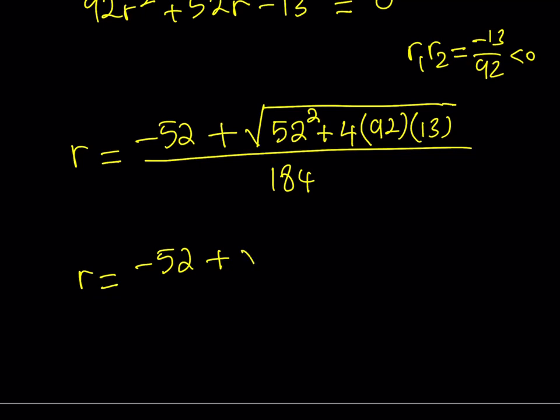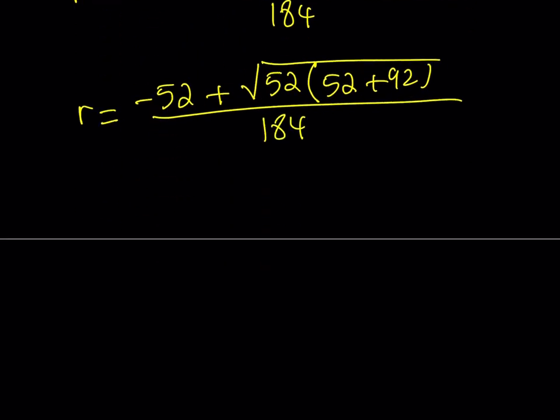So what I can do here is I can just go ahead and factor out a 52. And that should give me 52 times the quantity, 52 plus 92, because what I have here is 4 times 13 times 92. And that's kind of nice. So let's go ahead and simplify this further. Obviously, 52 is not a perfect square, so we're not going to be able to take it out. But here's the good news. 52 plus 92 is equal to 144. Isn't that beautiful? Because it is 12 squared.